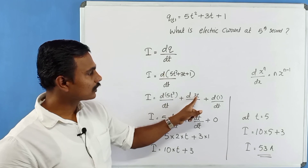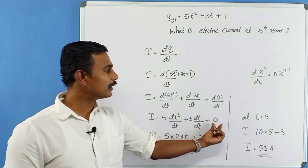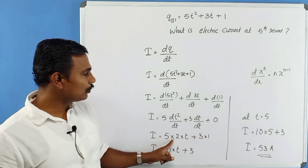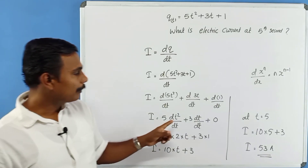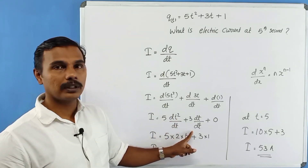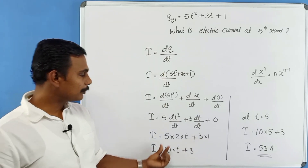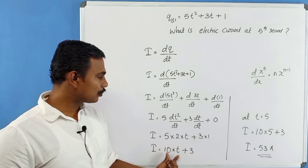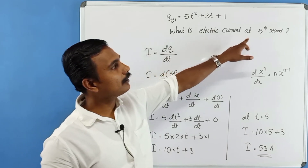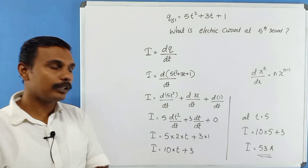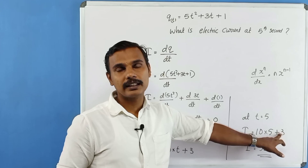Since 5 and 3 are constants, using the rule d/dx(xⁿ) = nxⁿ⁻¹, we get: 5 × 2t + 3 + 0 = 10t + 3. The constant term differentiates to 0. So electric current I = 10t + 3. At t = 5 seconds: I = 10(5) + 3 = 50 + 3 = 53 Amperes.